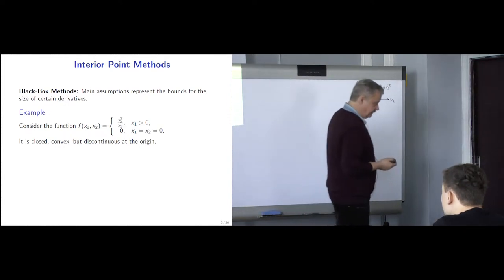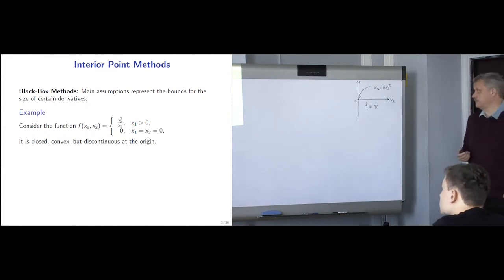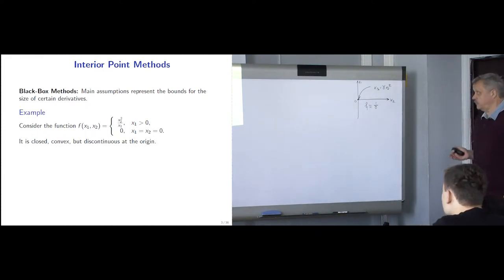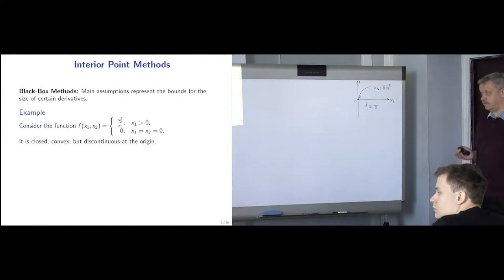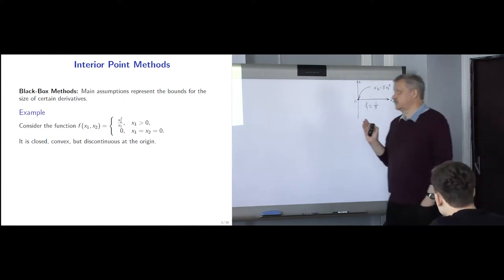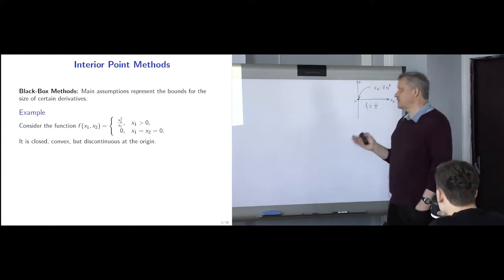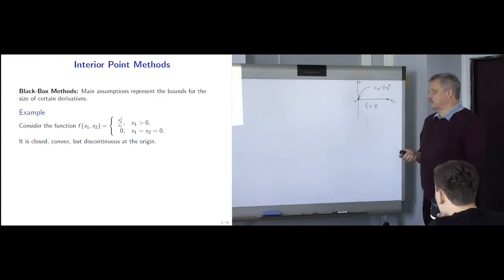If the function is discontinuous at the origin, we cannot speak about any bounds on the derivatives. We never have reasonable bounds for these derivatives. So from the point of view of standard black box optimization theory, this function is very bad — we don't want to look at it or minimize it.